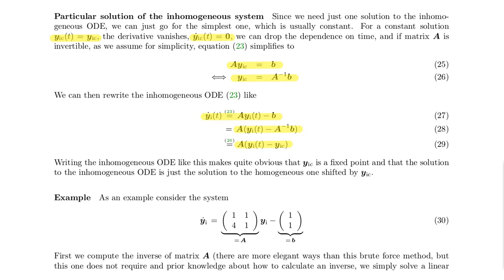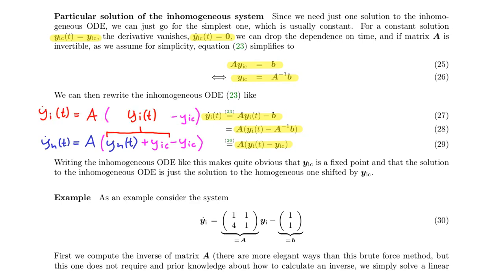Written this way, this differential equation nicely illustrates the superposition principle. If we have a solution of the homogeneous differential equation and add yic, we can align this with the inhomogeneous equation by defining yi as the sum of yh plus yic. Since yic is constant, the time derivatives of yi and yh do not differ. The inhomogeneous solution yi is simply yh — the general solution of the homogeneous equation — plus the particular solution yic.